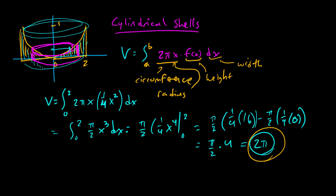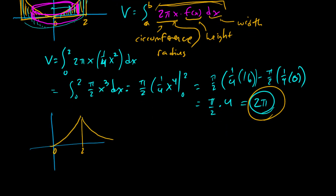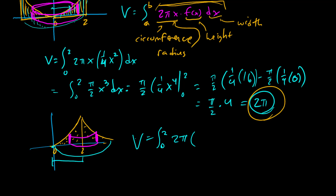Both methods give the same answer: 2 pi. This is why it's not enough to memorize the canned expression. For example, if I rotated around x equals 2 instead of the y-axis, the setup changes. I'm still integrating from 0 to 2 in x, but now the radius is not x — it's 2 minus x, because the closer I get to the axis of rotation, the smaller the radius becomes. The height remains 1/4 x squared and the width is dx.